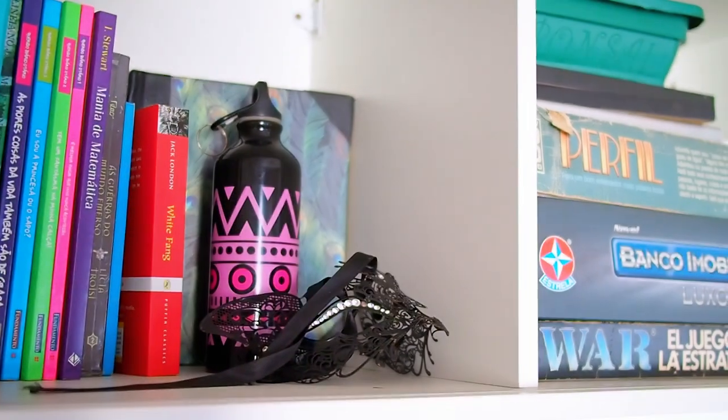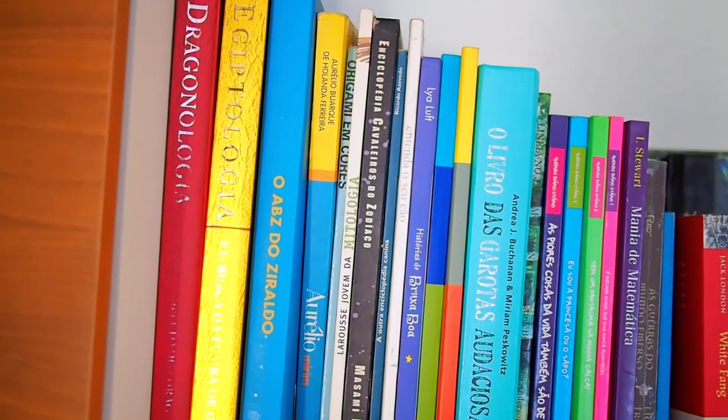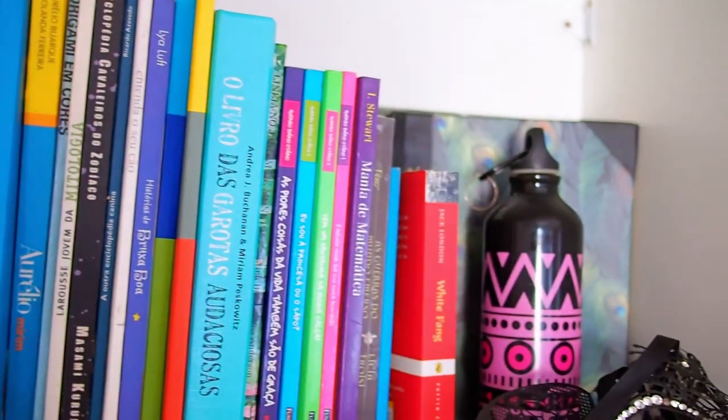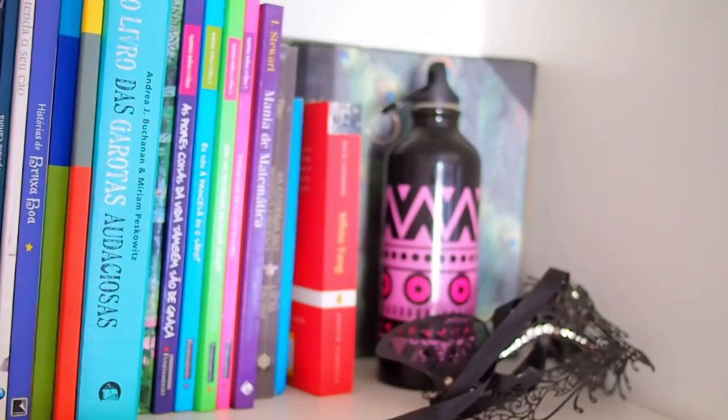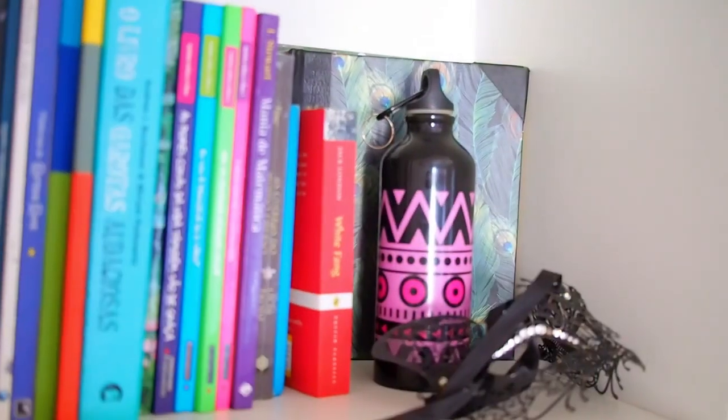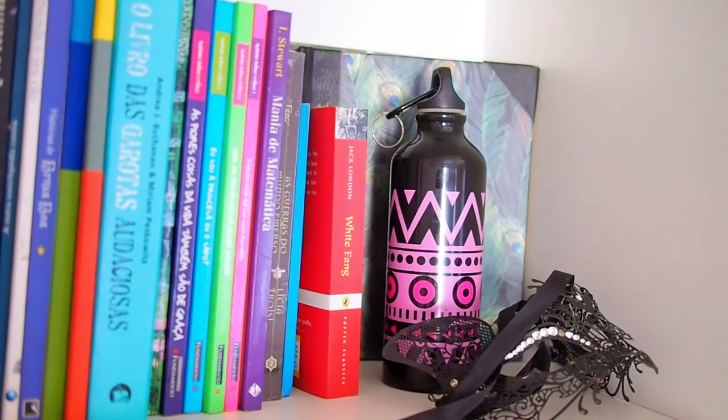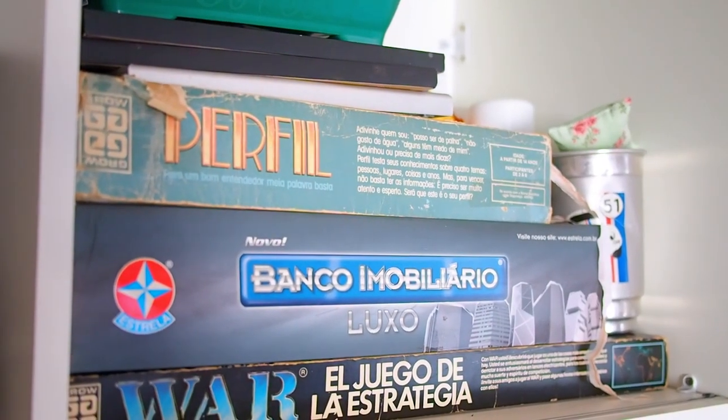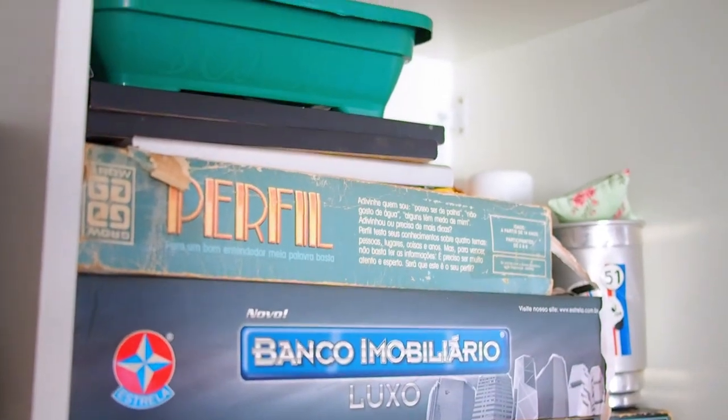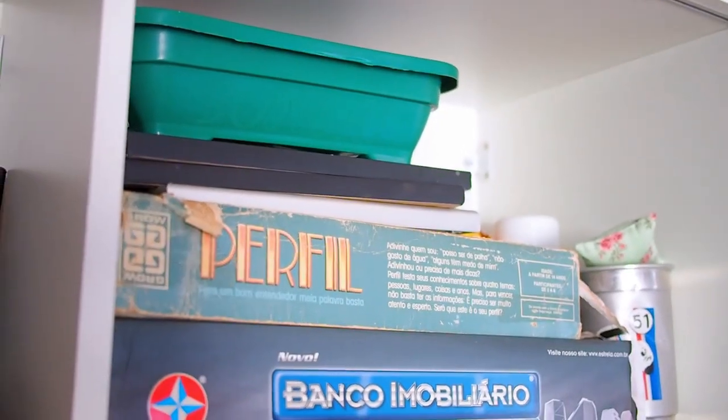Moving on to the next covered unit I have another unit for the books. These are mostly childhood books that I don't feel like giving away or that are very important to me so I keep them here. And I also keep some games and some plant holders in the other unit.